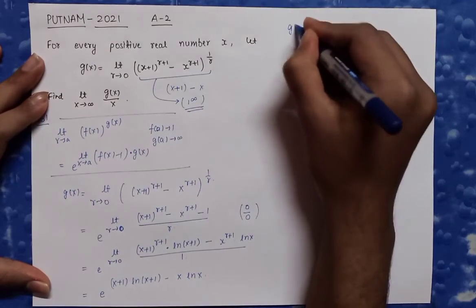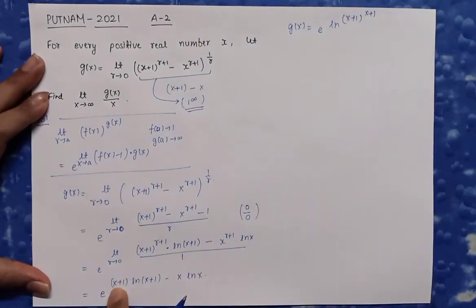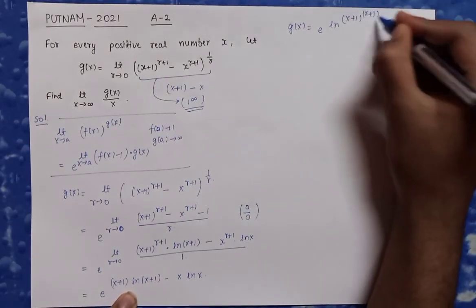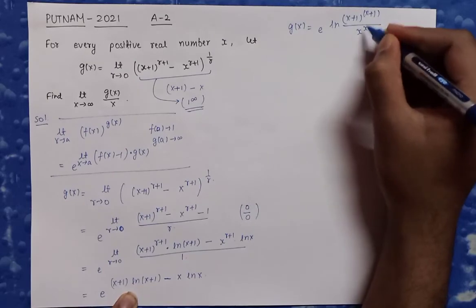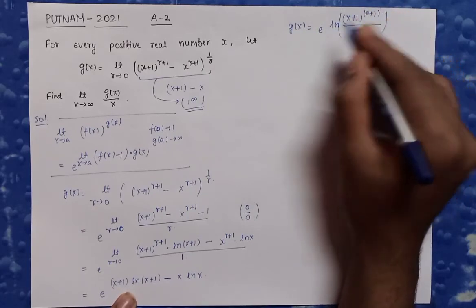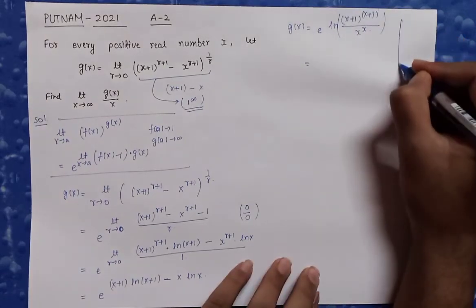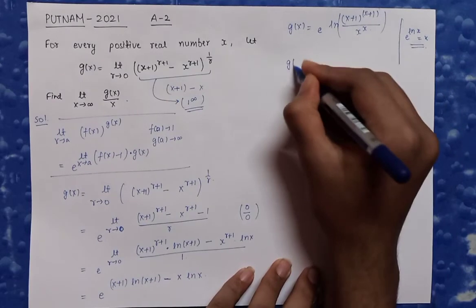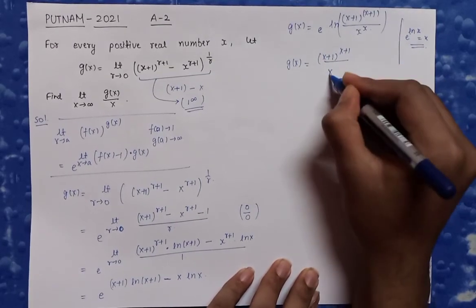So g(x) = e raised to the power of [(x+1)ln(x+1) - x·ln(x)]. Taking the (x+1) inside the ln term gives ln[(x+1)^(x+1)], and the x term gives ln[x^x]. So the exponent becomes ln[(x+1)^(x+1) / x^x]. Using the property e^(ln(A)) = A, we get g(x) = (x+1)^(x+1) / x^x.